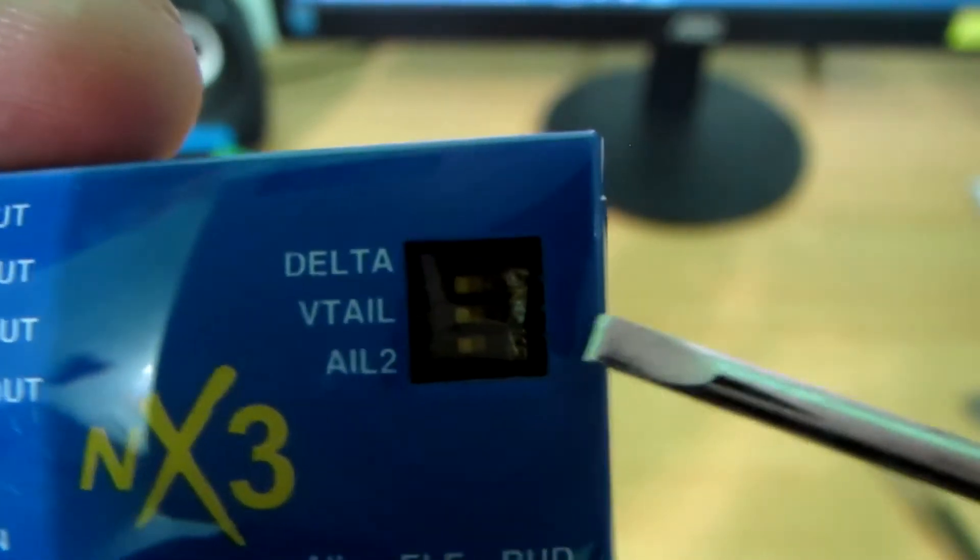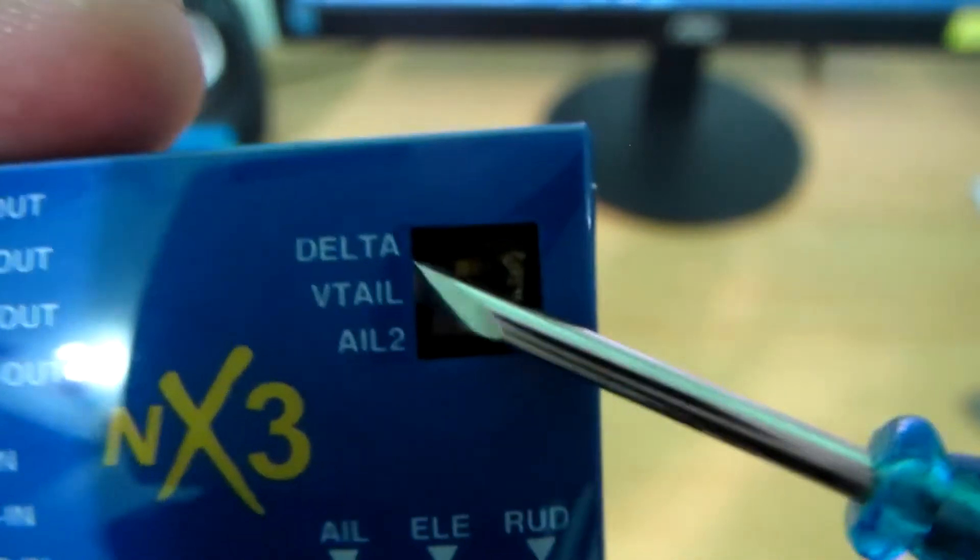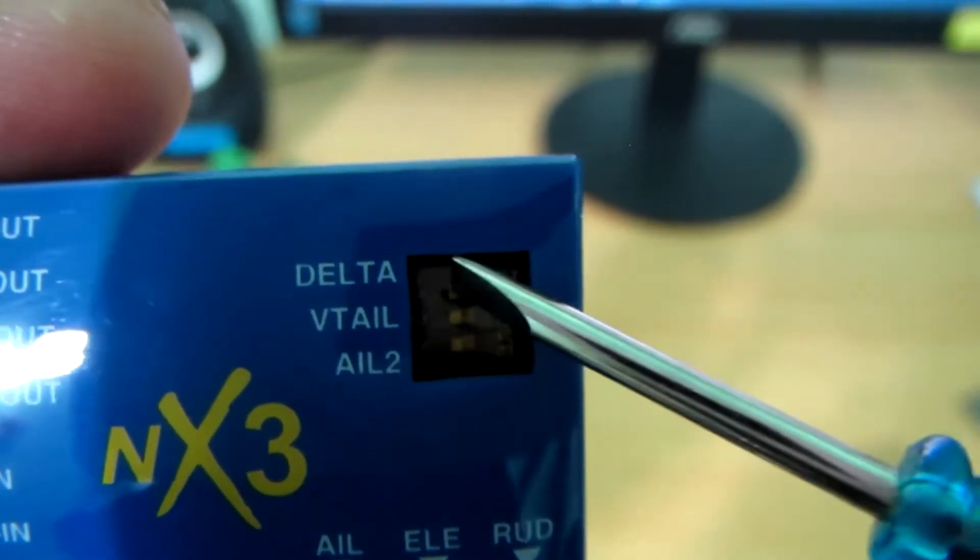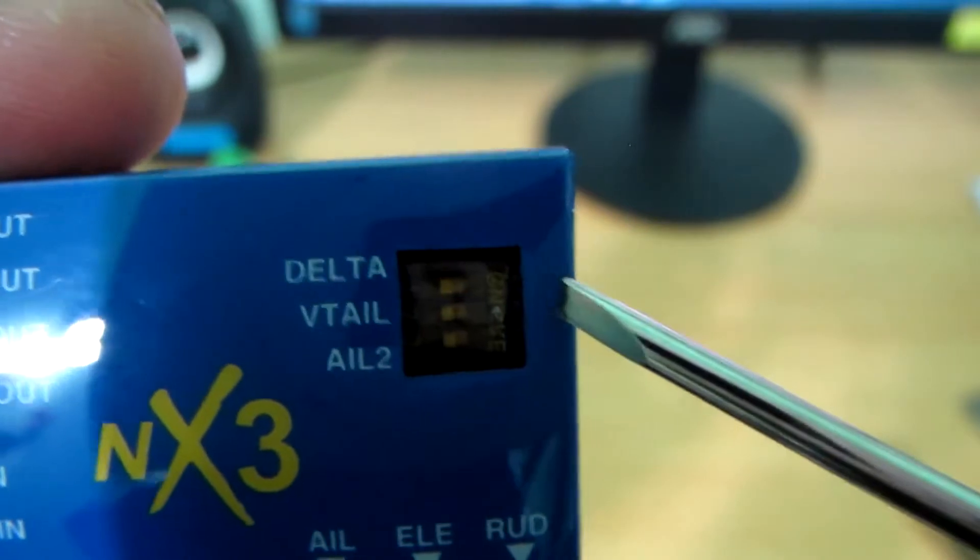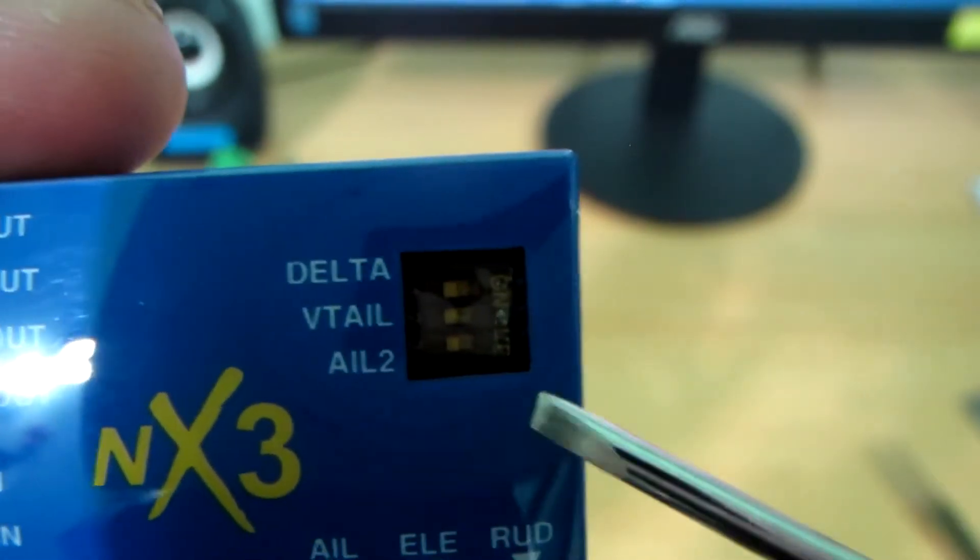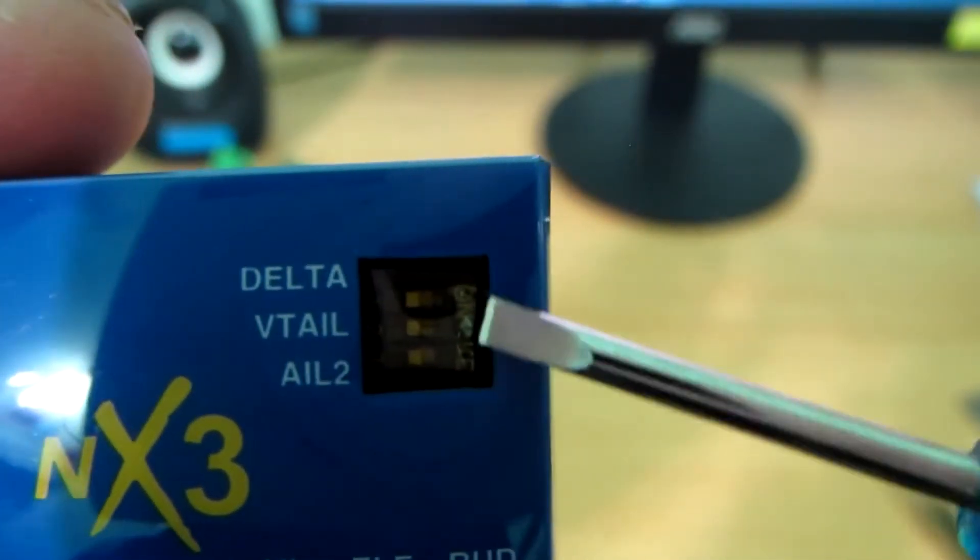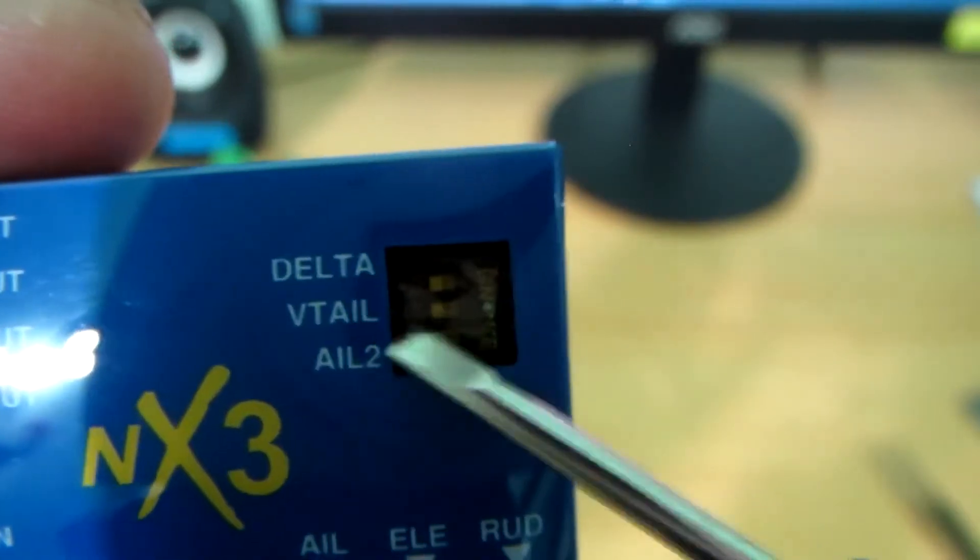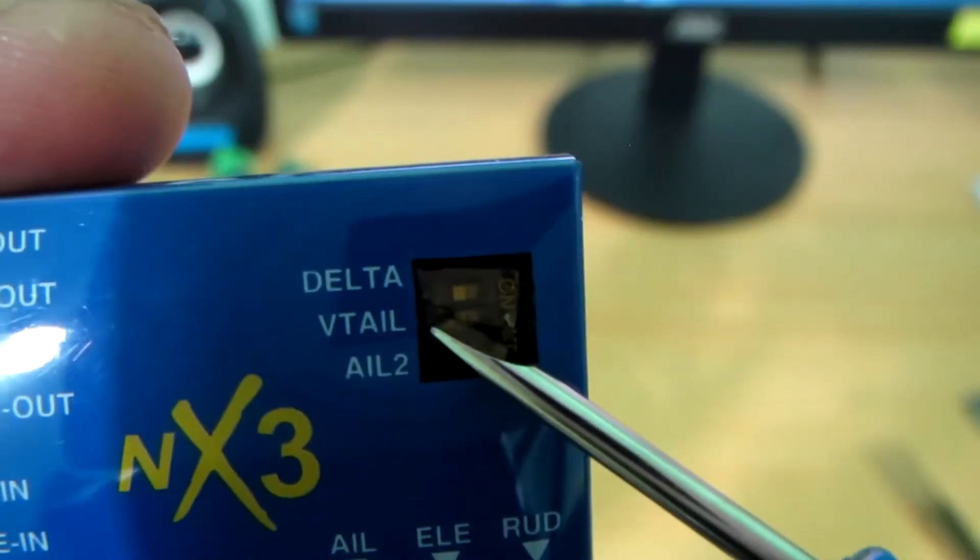This is the model selector - which model do you want to fly? These are the switches. This is the off side and this is the on side. All switches are now on the off side. That means it is now in the normal tail mode. If you want to select V-tail, then just switch this V-tail on.